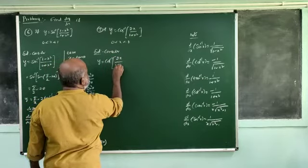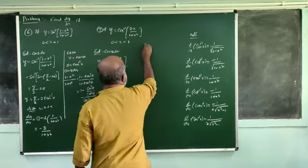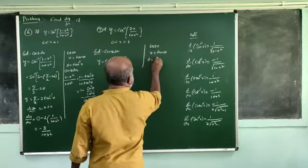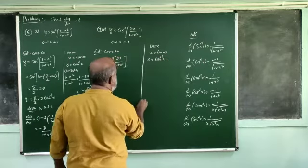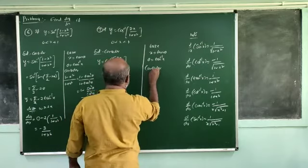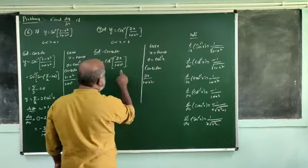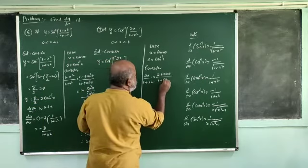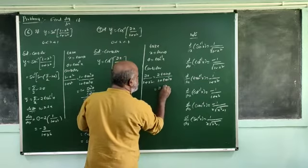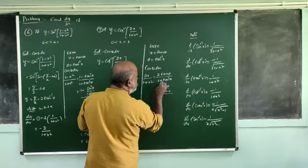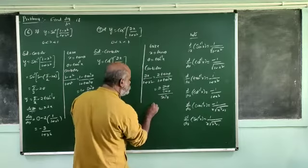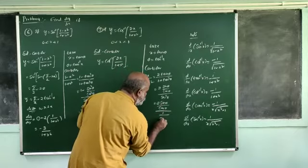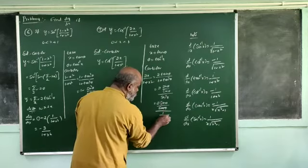Let 2.3 plus x squared be given, and let x equal to tan theta, so theta equals tan inverse of x. Consider 2 times x divided by 1 plus x squared. With x equal to tan theta, 2 tan theta divided by 1 plus tan squared theta equals sin 2 theta. Now 3 times secant squared theta, and 2 times x theta divided by x theta. Secant squared theta equals 1 plus tan squared theta.